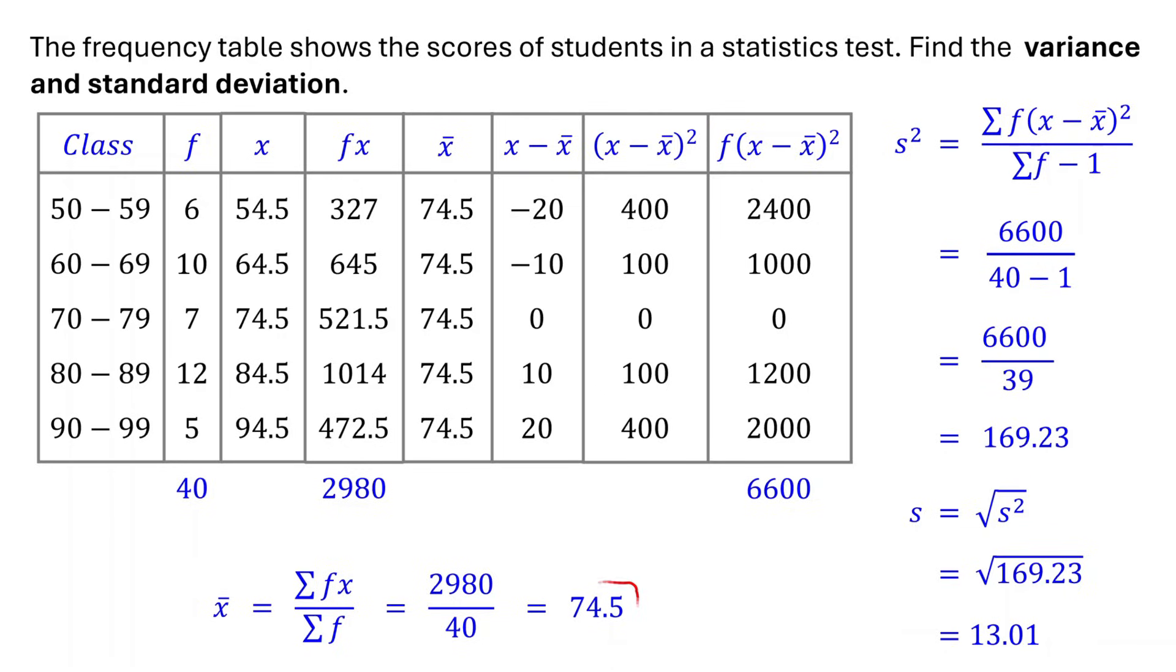Keep in mind, the mean, variance, and standard deviation we calculated are estimates. That's because we don't know each student's exact score. We only know the score ranges, and how many students fall into each range. So, we use the midpoint of each range to represent the scores. This means the values we calculated are not exact. They are estimates based on grouped data.